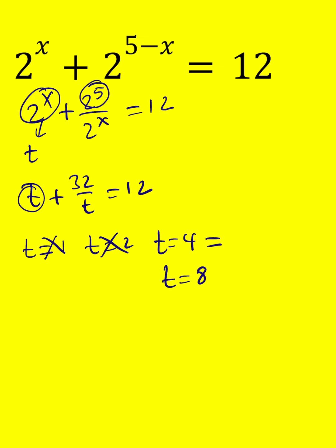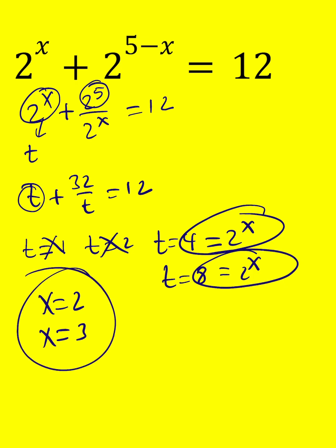We have two solutions, but guess what? t is 2 to the power x. So we're going to find the x values from here: x equals 2 and x equals 3. And those are the only solutions to this equation. Thank you for watching. Bye.